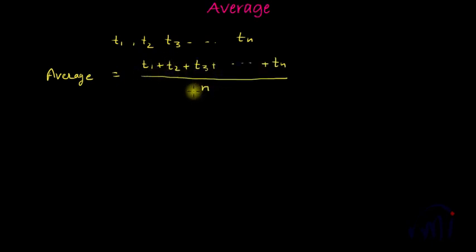So suppose if you have n terms - term 1, term 2, term 3 until term n - then average of these terms will be the sum of these terms divided by number of terms. So this is average.